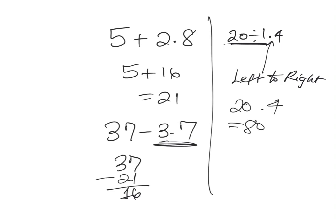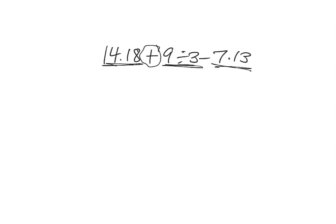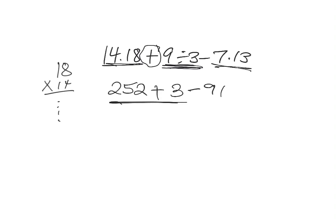Let's look at a longer problem — number twenty-four: fourteen times eighteen plus nine divided by three minus seven times thirteen. We take it step by step, dealing with all the multiplications and divisions first. Fourteen times eighteen is two hundred fifty-two; nine divided by three is three; and seven times twelve is eighty-four, plus seven more gives us ninety-one. So we have two hundred fifty-two plus three, which is two hundred fifty-five.